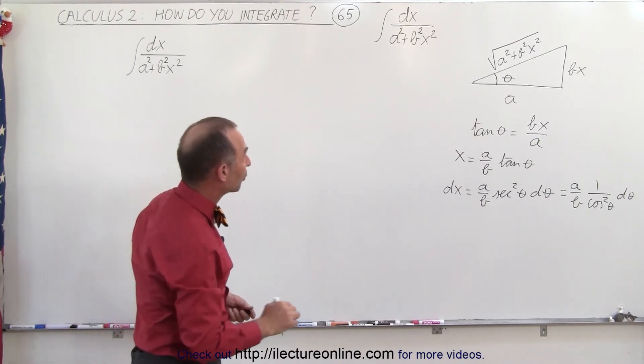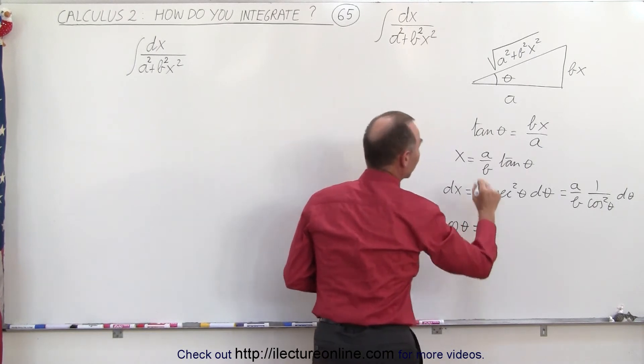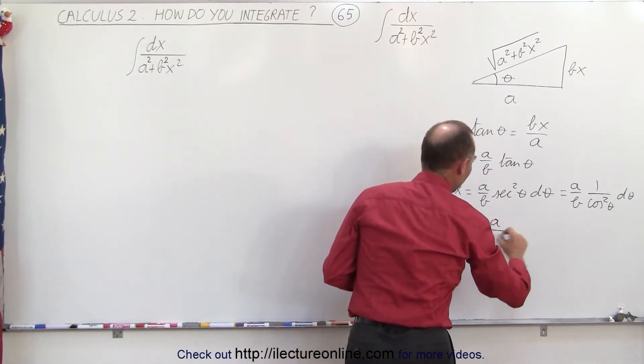We also need something for the denominator. So what we can do here is write that the cosine of theta is equal to the adjacent side over the hypotenuse.